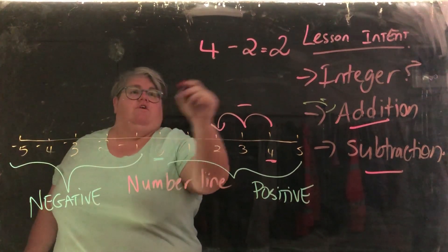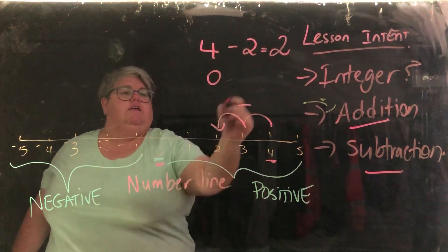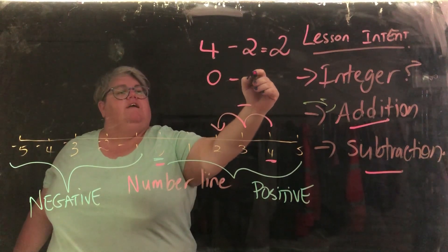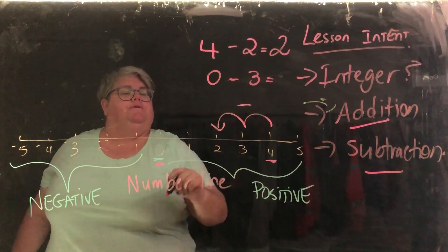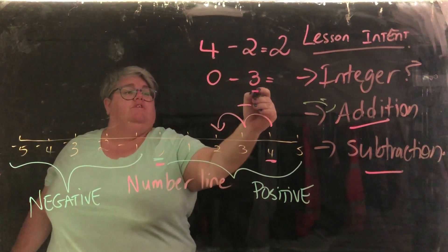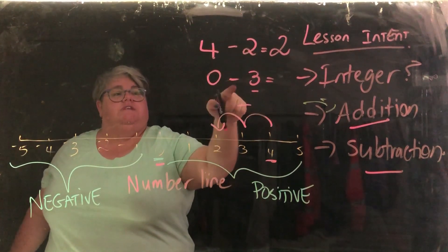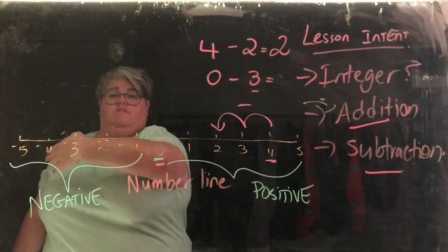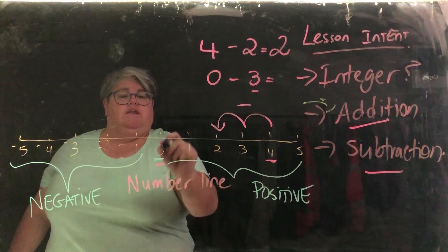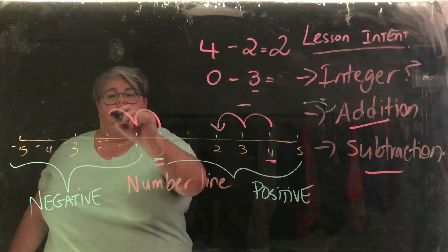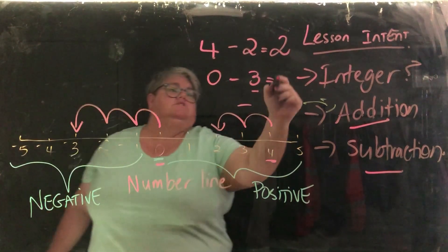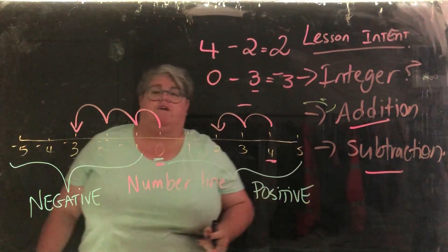So let's say we start at 0. So we're starting here and we take 3. So this is a positive number. But because this is negative, we're going backwards. So we're going this way. So we start here at 0, 1, 2, 3. So the answer is negative 3.